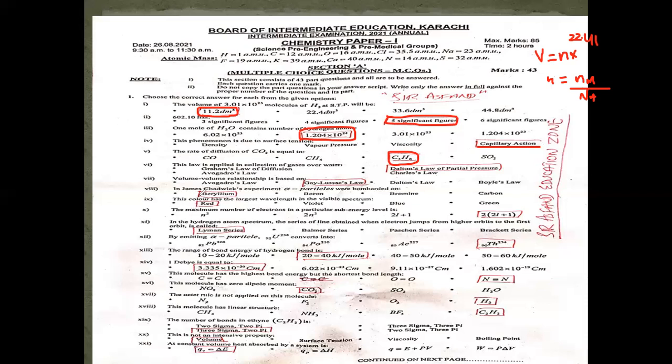This color has the largest wavelength in the visible spectrum. In the visible spectrum the order is violet, indigo, blue, green, yellow, orange, red. Red has the most lost — red has the longest wavelength.